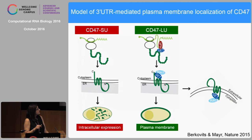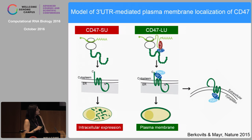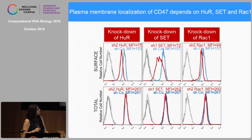Here is the model: if CD47 has a long 3' UTR, it binds HuR — an RNA-binding protein — which then recruits SET. After CD47 is translated, SET binds to CD47, and SET can also bind to RAC. Active RAC then transports CD47 to the plasma membrane. If CD47 has a short 3' UTR, there are no HuR binding sites, so HuR doesn't bind, SET is not recruited to the site of translation, and CD47 is retained intracellularly. The three key players are HuR, SET, and RAC. If we knock down each one of them, total CD47 expression doesn't change, but in all three cases surface expression decreases.